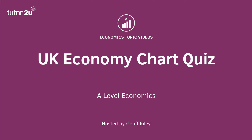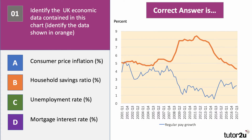Here's the first one: identify the UK economic data contained in this chart. We're looking at the orange data. The blue line shows regular pay growth as a percentage. What does the orange line show? Is it consumer price inflation, the household savings ratio, the unemployment rate, or the mortgage interest rate? Press pause, have a think about the data, then press play when you want the answer.